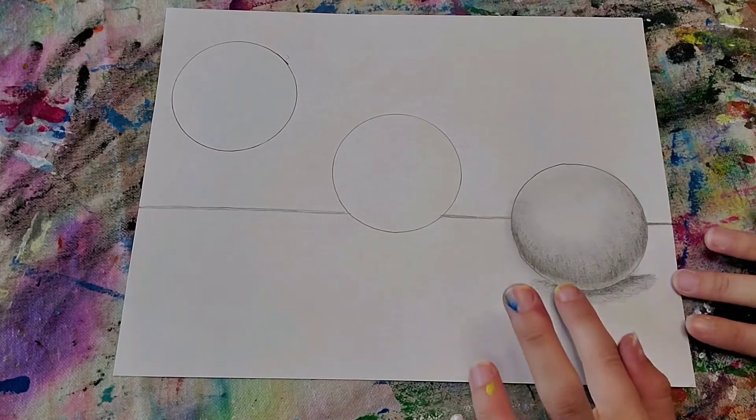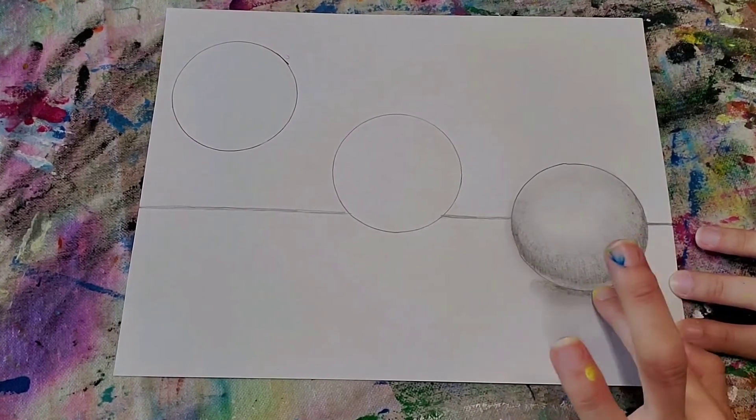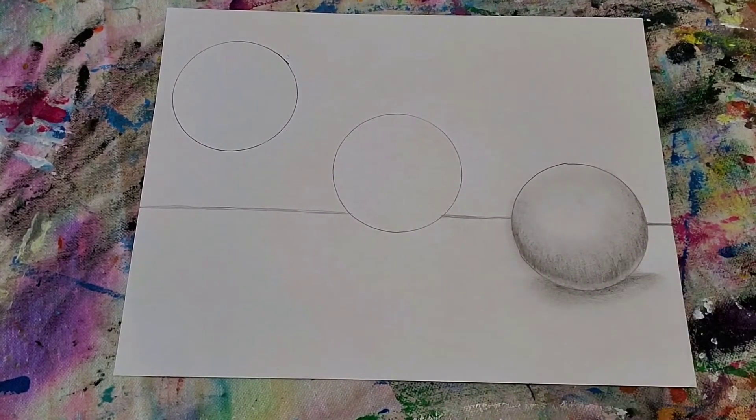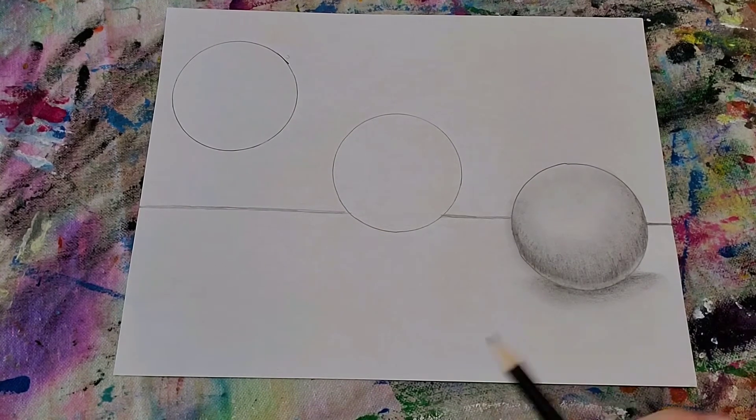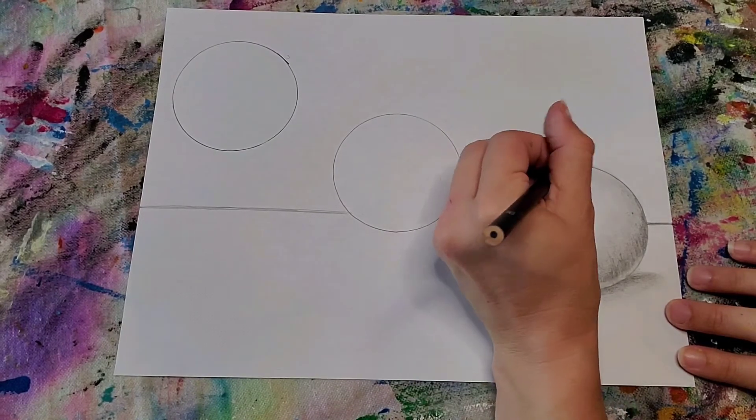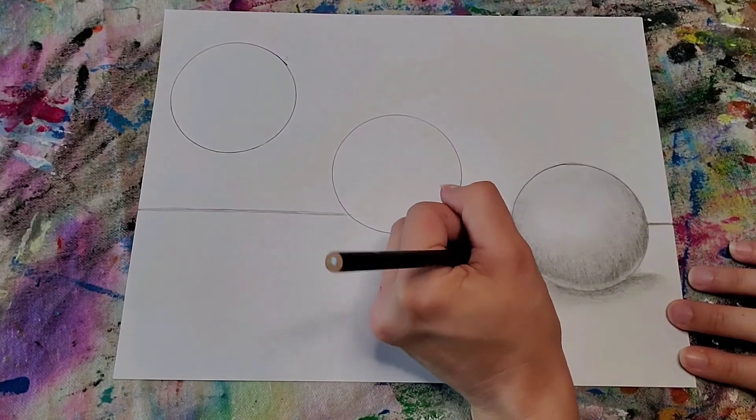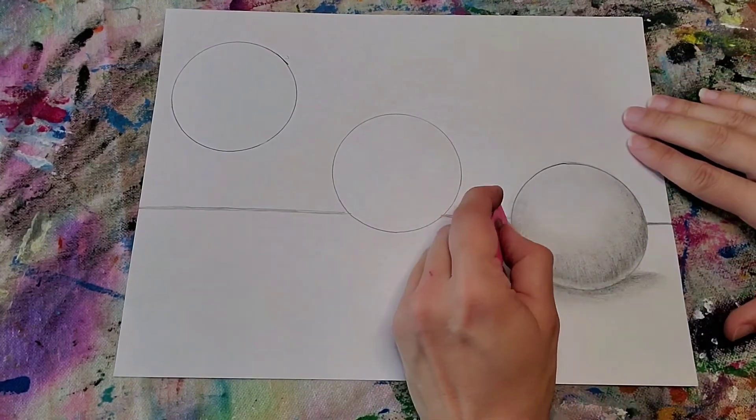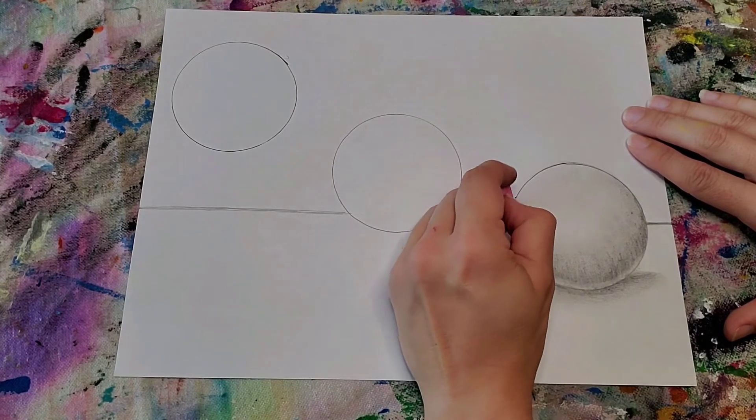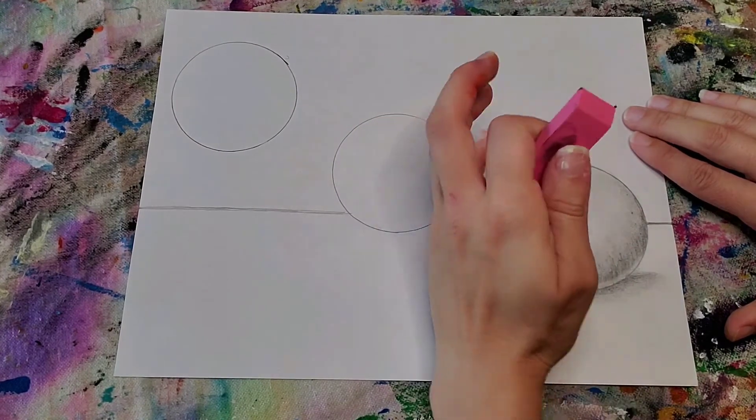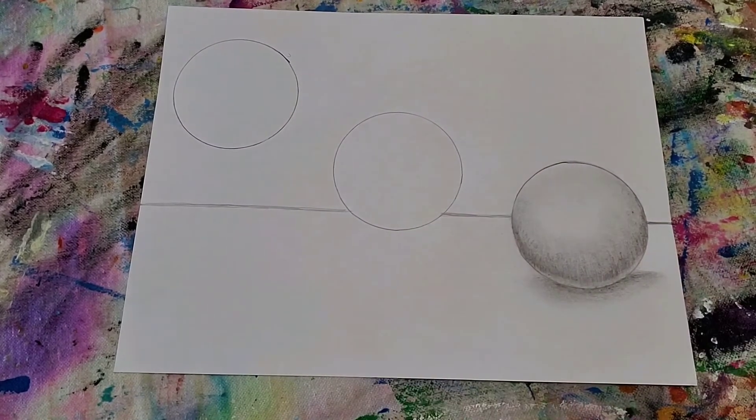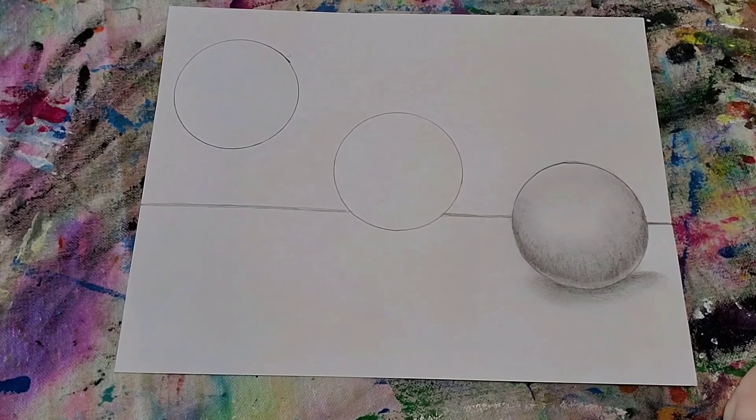Okay, I'm going to take my finger, we're going to smudge that, a little shadow there. Just going around my circle again. And I am going to erase the little smudge marks that went outside of my circle. Okay, so that's my first one.